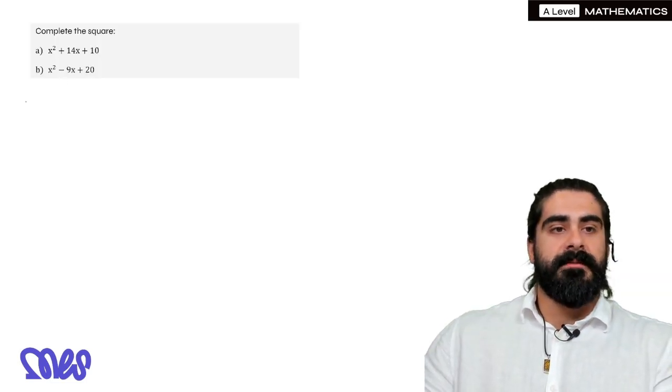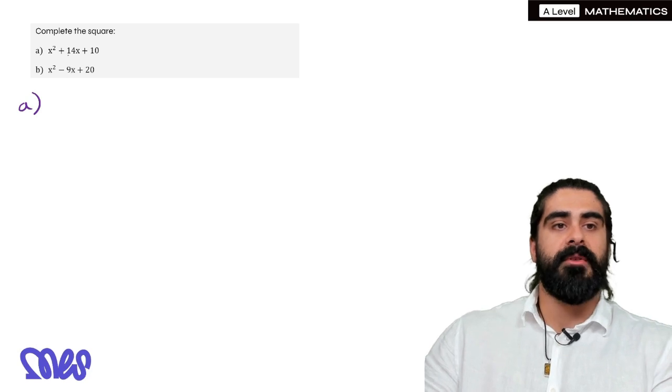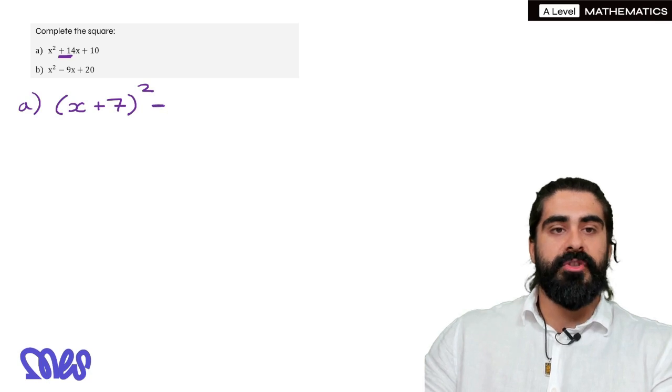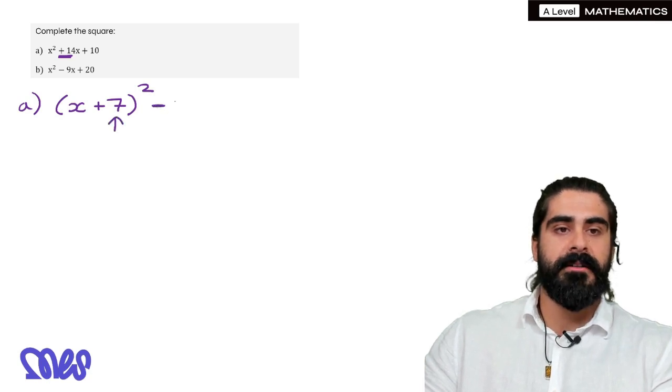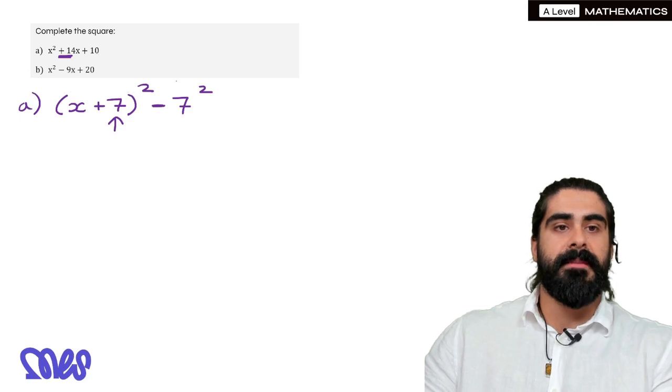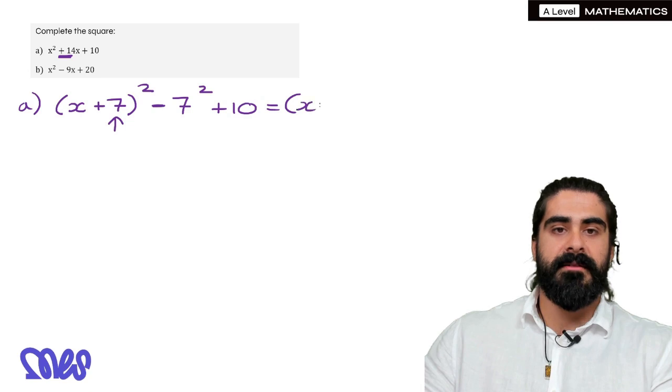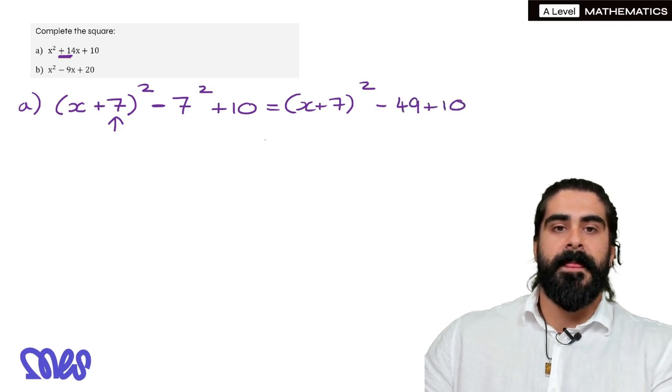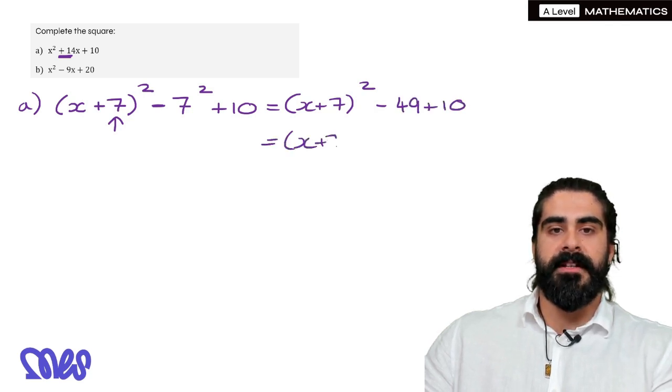So X squared plus 14X plus 10. So remember, we half the coefficient of X, so we introduce a bracket, X, and then half of plus 14 is 7 squared. Then we subtract this number squared, so 7 squared, and the plus 10 just carries over. We can simplify it now, so we have X plus 7 squared, then we have subtract 7 squared is subtract 49, then plus 10, and then we are left with X plus 7 squared, minus 49 plus 10 is minus 39.